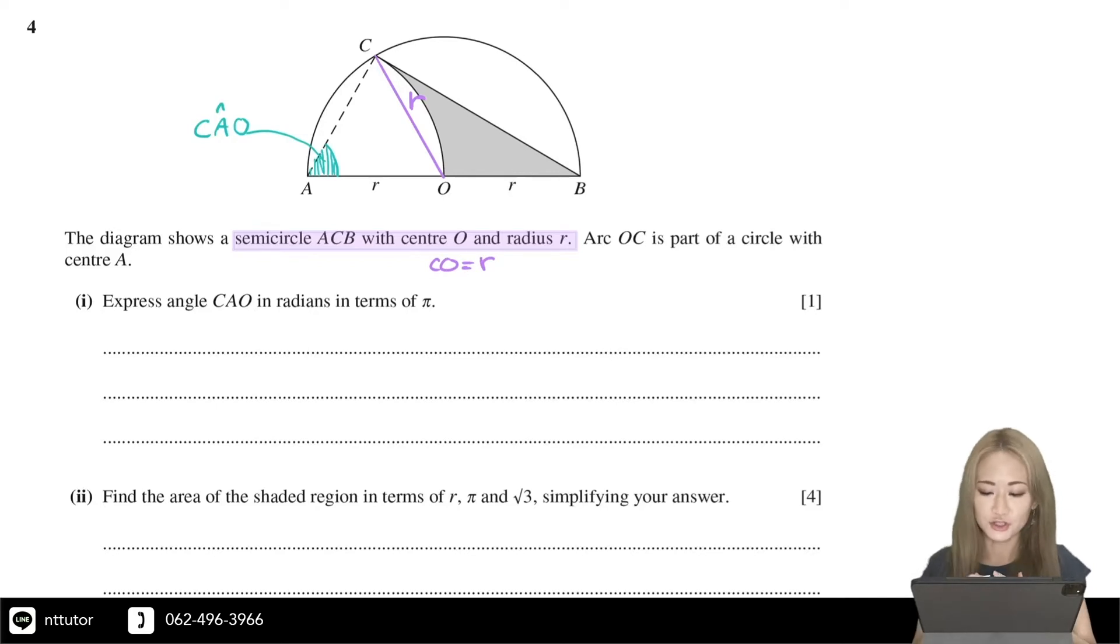It says that arc OC is part of a circle with center A. Therefore, AO is the radius of that circle with center A. If AO is the radius,